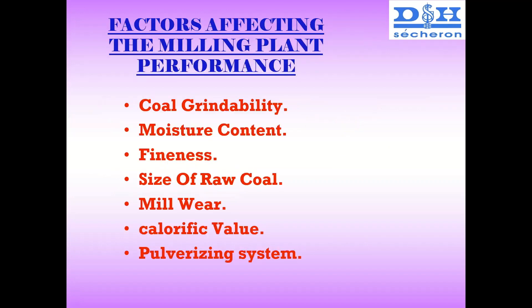The factors that affect milling plant performance are: coal grindability, moisture content, fineness, size of the raw coal, mill wear, calorific value, and of course the type and quality of coal. The pulverizing system also plays a role.